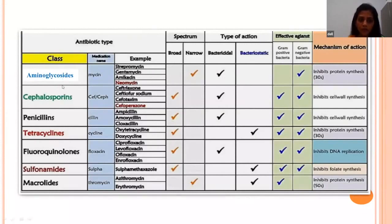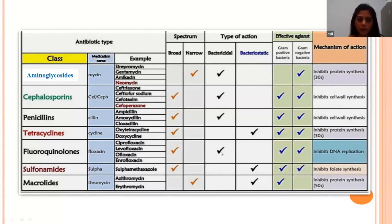This table shows the classification of commonly used antibiotics — aminoglycosides, cephalosporins, sulfonamides, and macrolides — based on their spectrum of activity and type of action. Aminoglycosides have a narrow spectrum, while cephalosporins, penicillins, tetracyclines, fluoroquinolones, and sulfonamides have broad spectrum activity. Bactericidal antibiotics include aminoglycosides, cephalosporins, penicillins, and fluoroquinolones, whereas sulfonamides, tetracyclines, and macrolides are bacteriostatic — inhibiting or suppressing microbial growth.